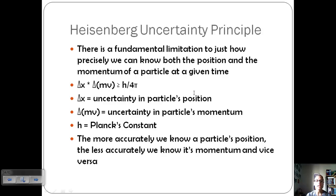The more accurately you know a particle's position, the less accurately you're going to know its momentum and vice versa. That's the Heisenberg uncertainty principle. You can't know both the position and the momentum. One's going to be sacrificed for the other.